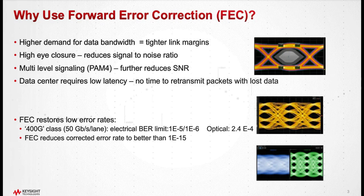And now with the 400G class, we moved to multi-level signaling, specifically PAM4, and that even aggregates this effect of reduced signal-to-noise ratio. You lose 9.6 dB of usable SNR when you go from NRZ to PAM4, assuming that the logic levels remain the same.